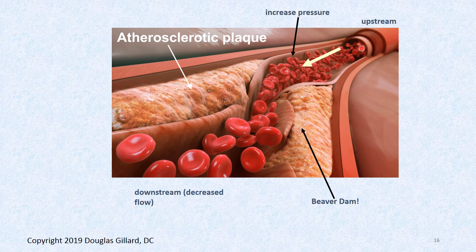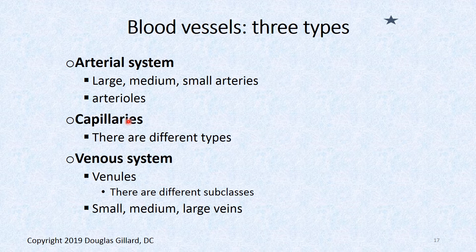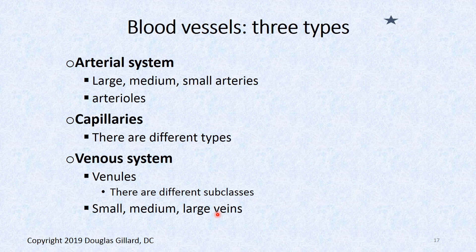There are three blood vessel types: the arterial system, made up of large, medium, and small arteries, with arterioles as the smallest member; capillaries, of which there are three types; and the venous system, made up of venules, small, medium, and large veins. An example of a large vein would be the inferior and superior vena cava — about as big as they get.